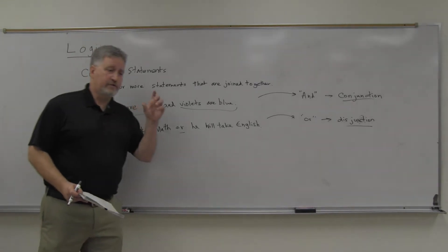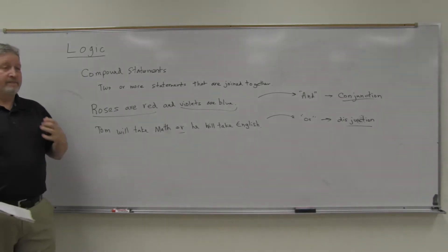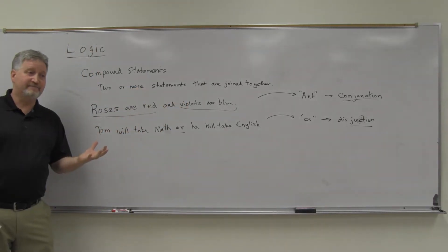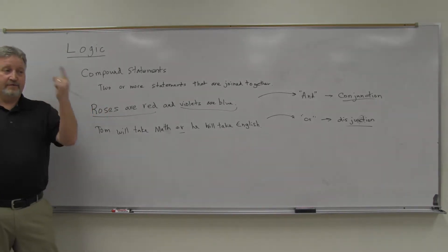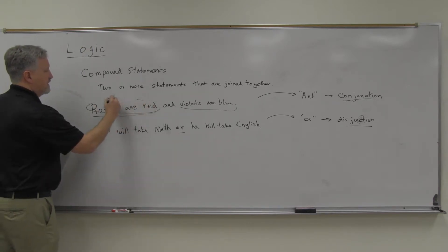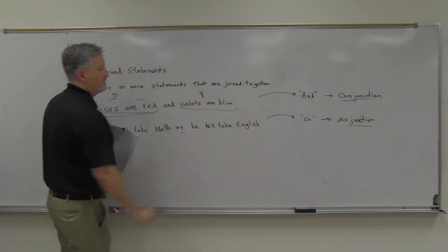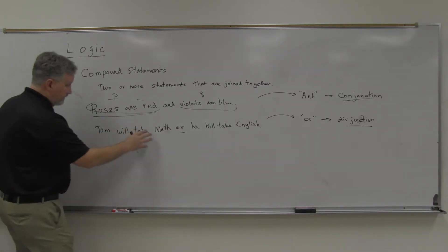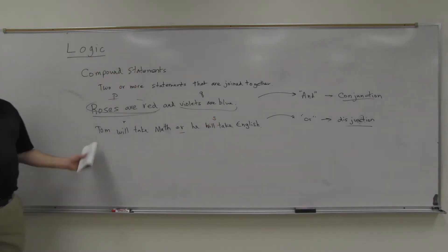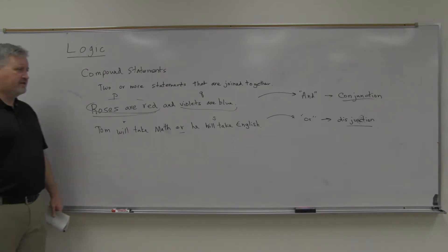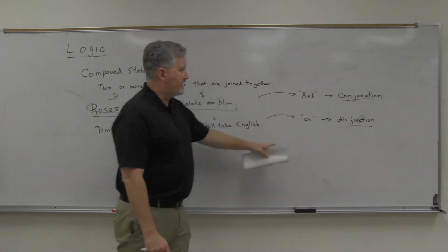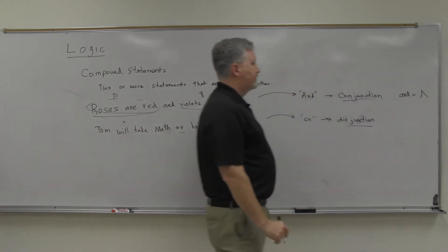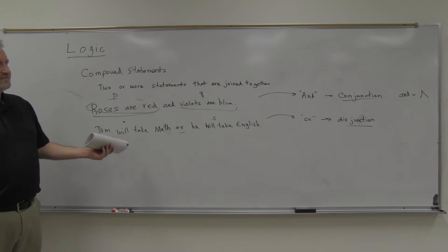With statements, we represent them with lowercase letters, typically starting with p. So one statement would be p, another would be q, then r, and so on. For the connectives, 'and' is represented with a wedge-like symbol pointing up — it almost looks like a capital A, which helps you remember it. 'Or' is represented with a V-shaped symbol.